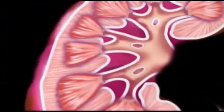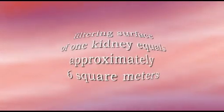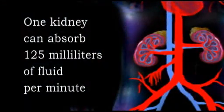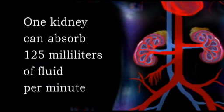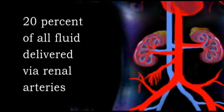If the filtering surface in every nephron in just one of our kidneys were smoothed out and stitched together, it would equal approximately 6 square meters, the size of a sail on an 18-foot sailboat. One kidney can absorb 125 milliliters of fluid per minute, or 20% of all the fluid delivered via the renal arteries.